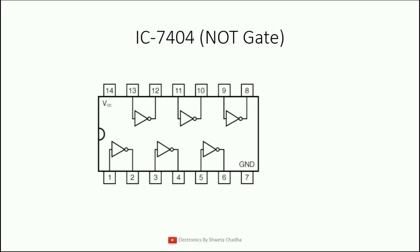The next pin diagram is the NOT gate, IC 7404. In a NOT gate, we can have only one input and one output — that is a mandatory condition. Pin 7 is ground, pin 14 is VCC. Then: pin 1 input, 2 output; pin 3 input, 4 output; pin 5 input, 6 output; pin 9 input, 8 output; pin 11 input, 10 output; pin 13 input, 12 output.